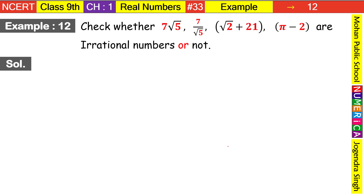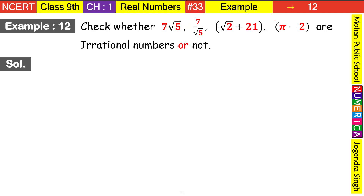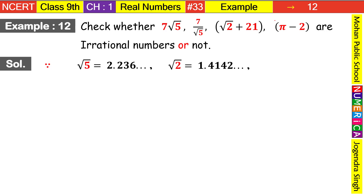Here we need to find out whether these given numbers are rational or irrational. For the solution, we need to know the values of √5, √2, and π. So first of all, √5 = 2.236... (non-terminating, endless). Our second number, √2 = 1.4142... and π = 3.14159... continuing to infinite.